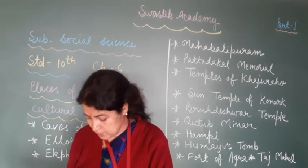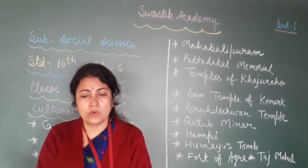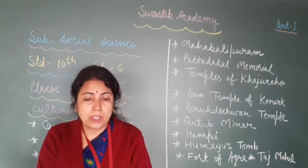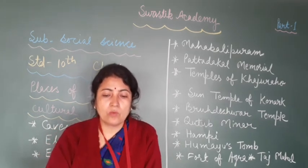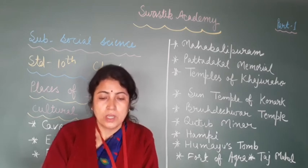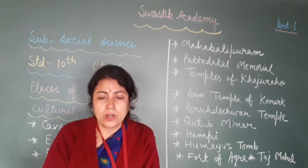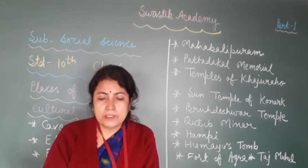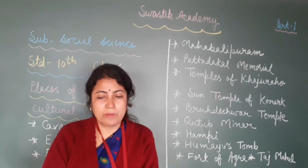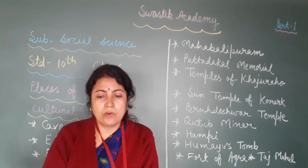Qutub Minar is located in Delhi. It was built in the 12th century by Qutub-ud-din Aibak, who was the founder of the Slave dynasty. After his death, the remaining work was completed by his son-in-law Iltutmish. This 72.5 meter tall structure is made out of round red stone and marble. Its circumference is 13.75 meters at its base and reduces to 2.75 meters at its top. Verses of the Quran have been engraved on it.